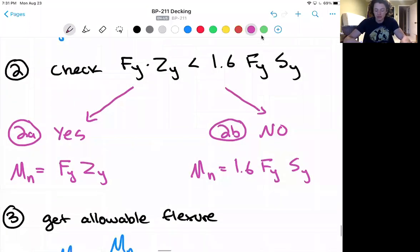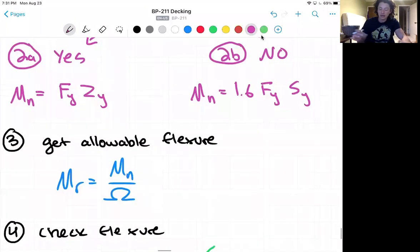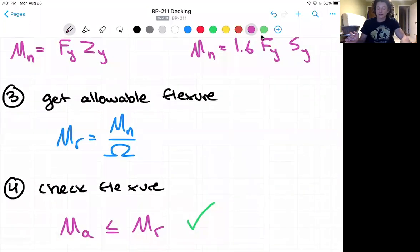Next, we want to get our allowable flexure which is just going to be the nominal capacity divided by the factor of safety. And we can check our flexure which will be MA less than or equal to MR of the variables we've defined.